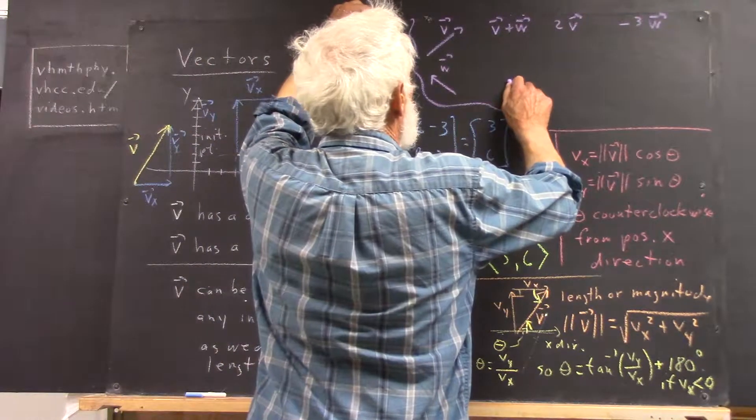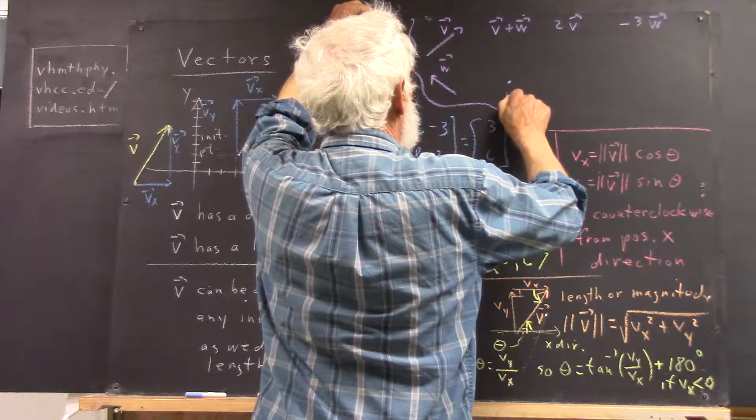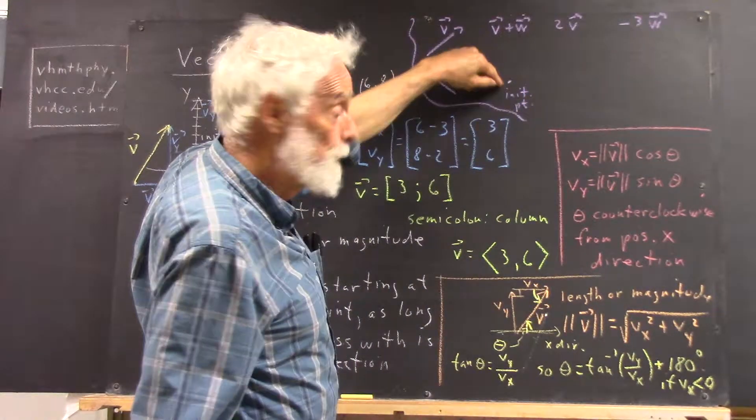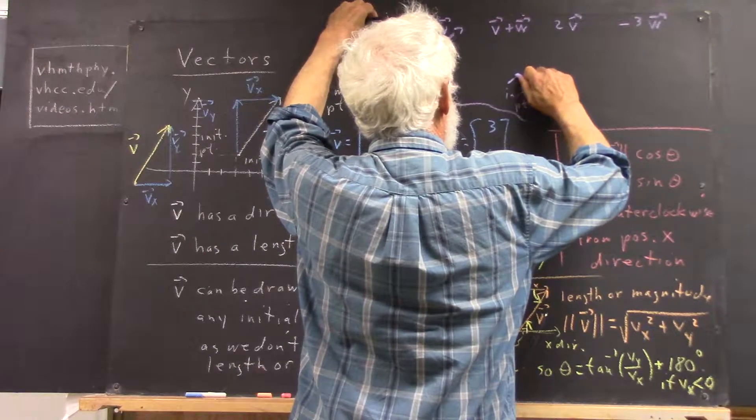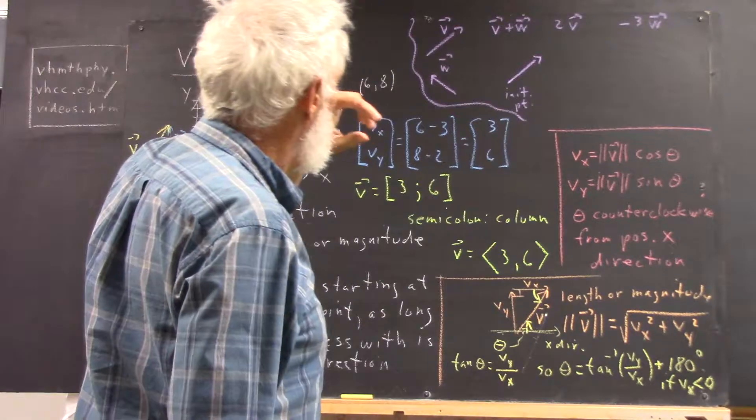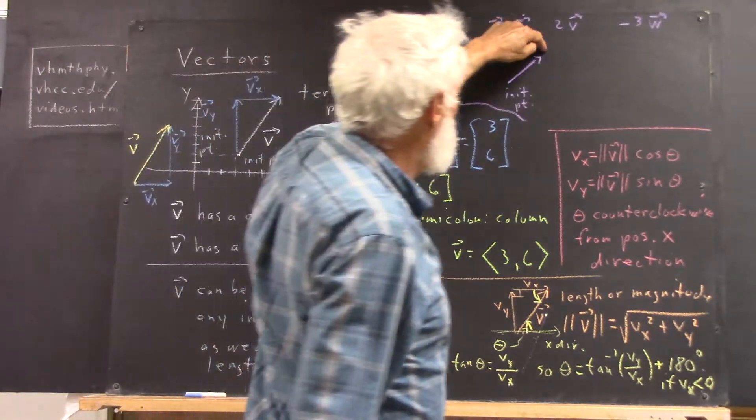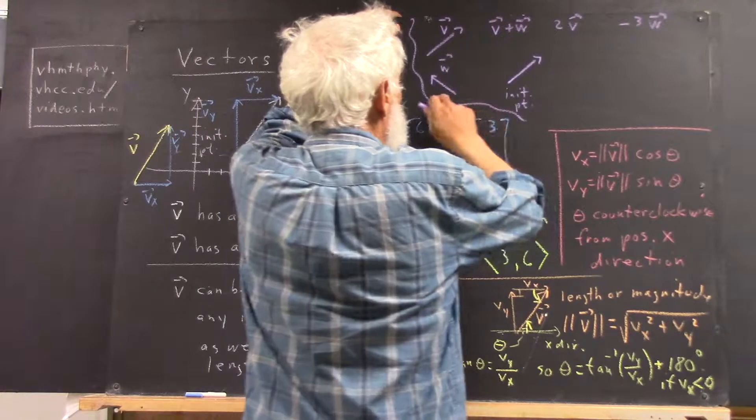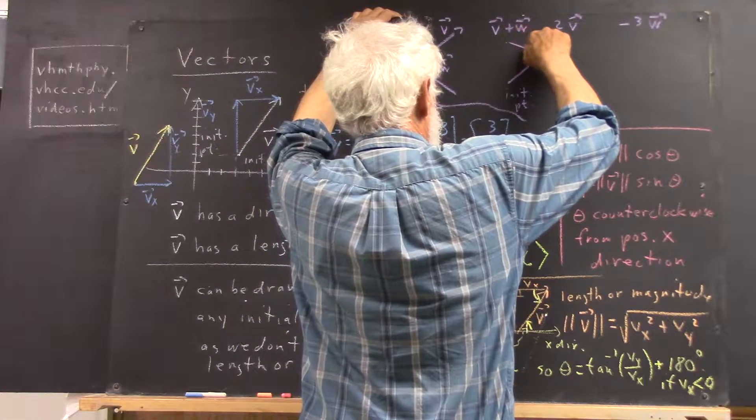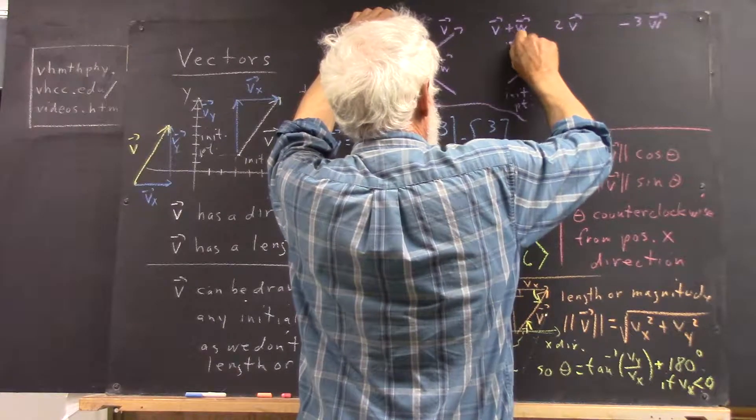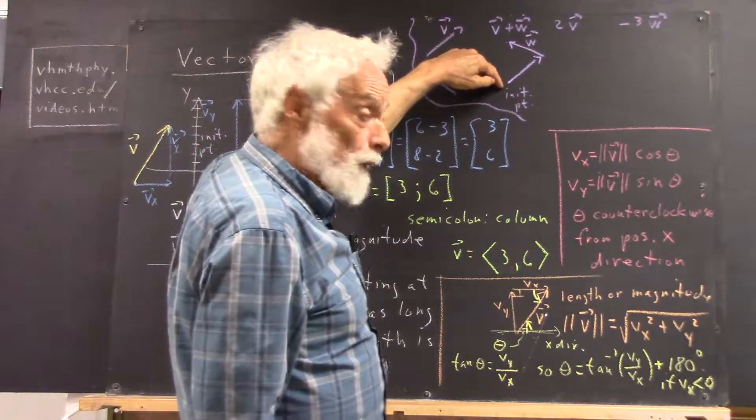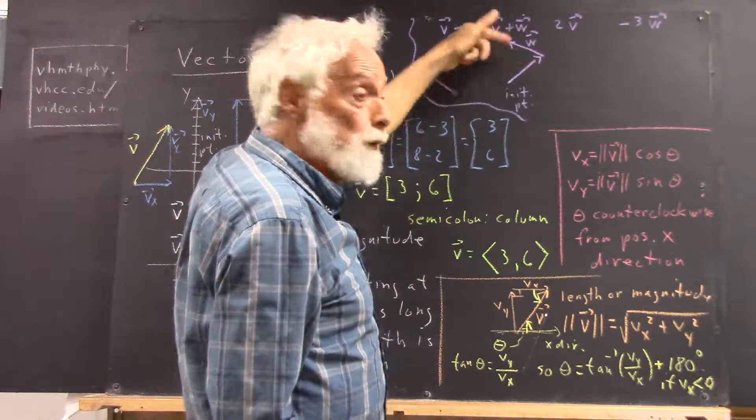It just means this. We'll start from some initial point, and we'll draw the vector v. Maybe I did that all right. And then from the terminal point of v, we draw the vector w.